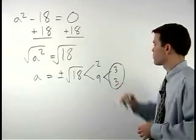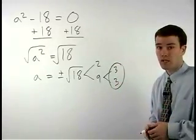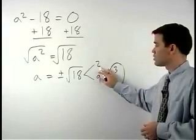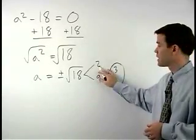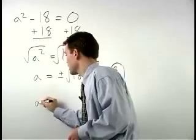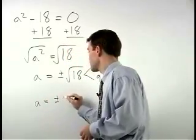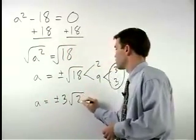So we have a pair of 3s, which means that a 3 comes out of the radical and a 2 stays inside. So our answer is a equals plus or minus 3 root 2.